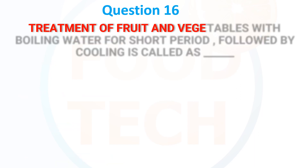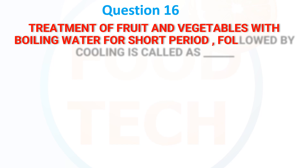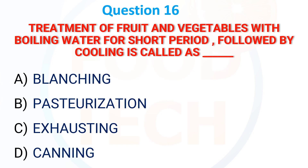Treatment of fruits and vegetables with boiling water for a short period followed by cooling is called: A) Blanching, B) Pasteurization, C) Exhausting, D) Canning. The answer is Blanching.